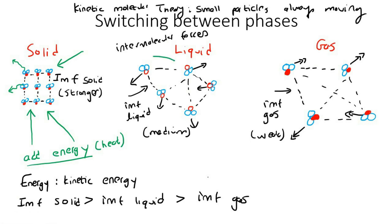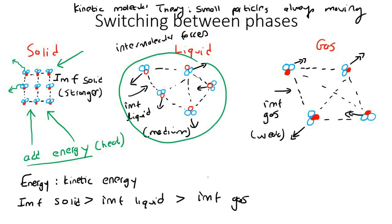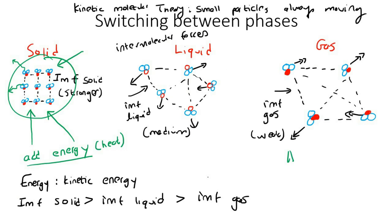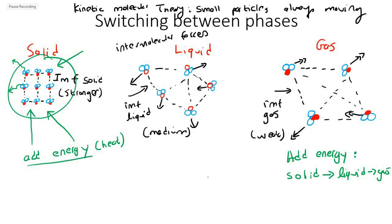The same applies going from a liquid — where intermolecular forces are medium — to a gas where they are weak. You add heat to the liquid and that turns it into a gas. So as you add heat you can go from a solid to a liquid and then to a gas.